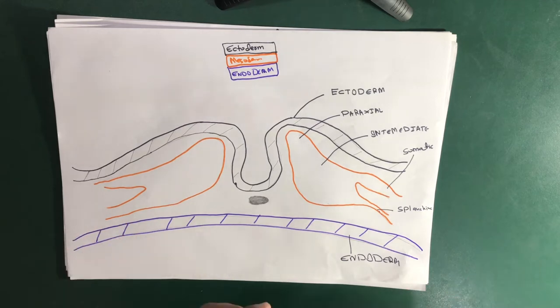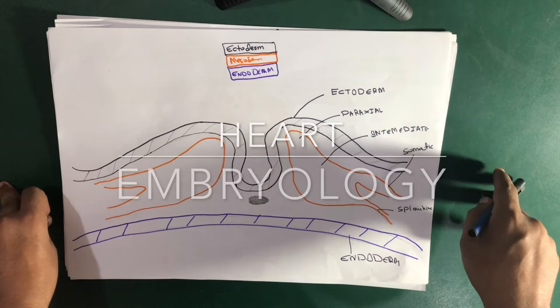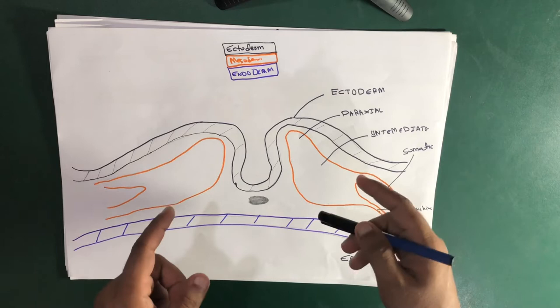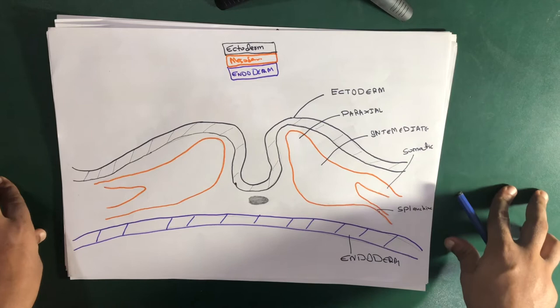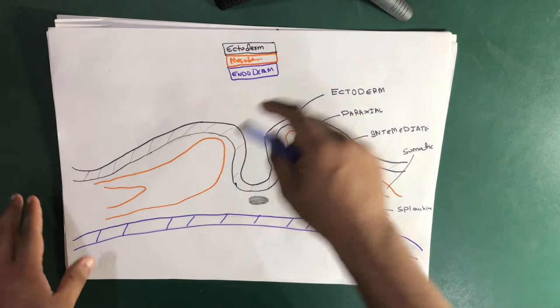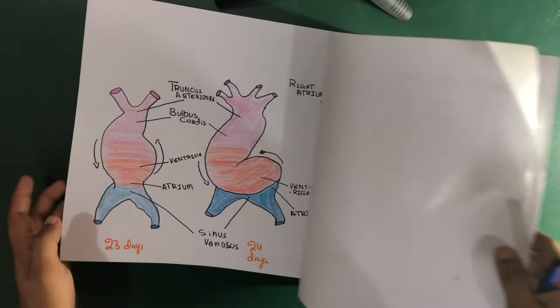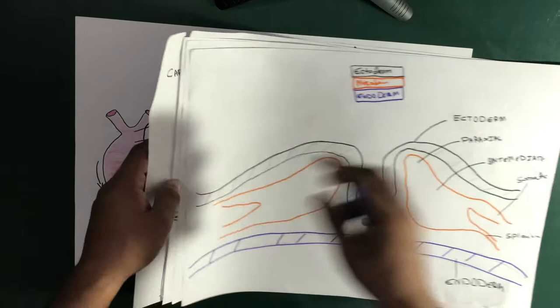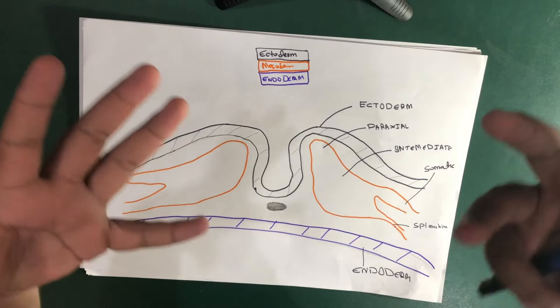Hello YouTube, this is Sam from Talk The Schooling. Today we're going to talk about the embryology of the heart — the formation of the heart. This was requested by Ammar Khan. We are going from the basics all the way through the development, starting from ectoderm, mesoderm, and endoderm, right through to the complete structure of the heart.